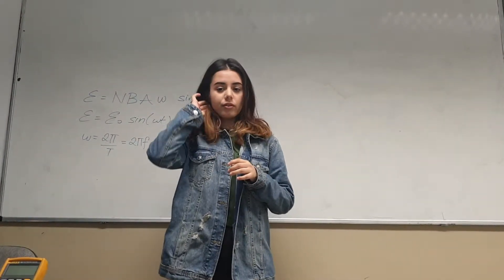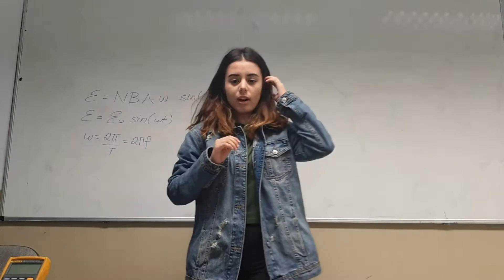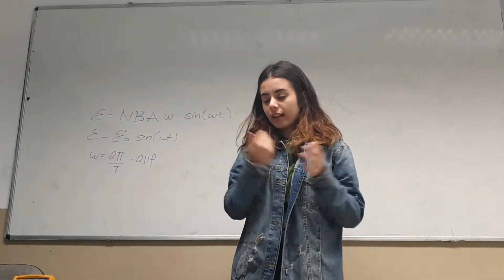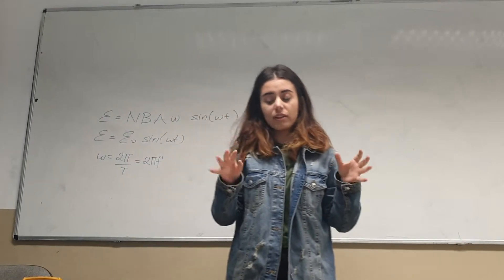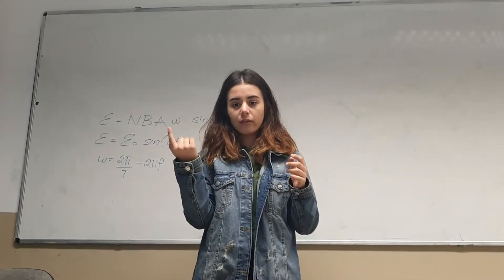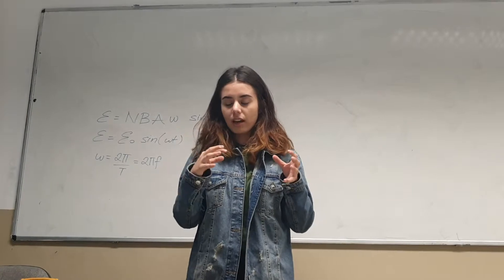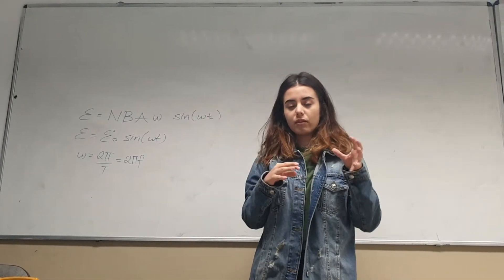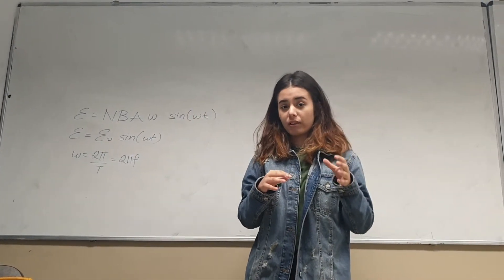First of all, I'll introduce and describe our setup. We have a coil inserted in a hollow wooden box, which will be our support. Inside the wooden box, we have a coil which has 800 turns of copper wire around it. And inside, we have a magnet which has 700 micro-teslas of magnetic field.